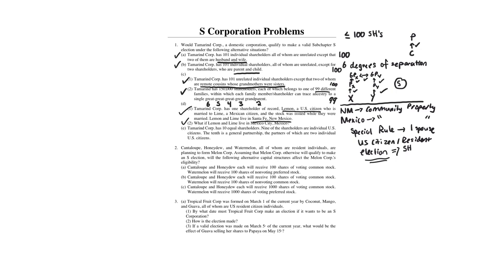In situation E, Tamron has 10 equal shareholders — 9 are individuals and the 10th is a general partnership. Right there, we cannot be an S-corporation. In situations A through D, we have a check mark because we can get S-corporation status. But E fails because you cannot have an entity as an owner of an S-corporation.